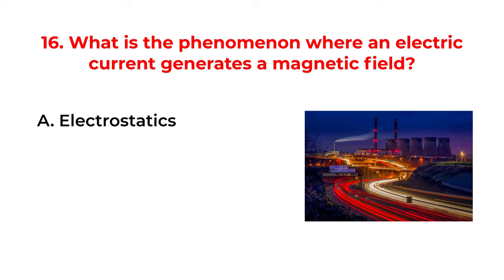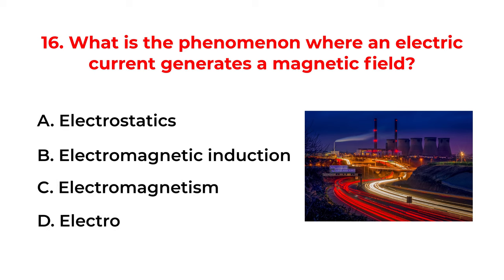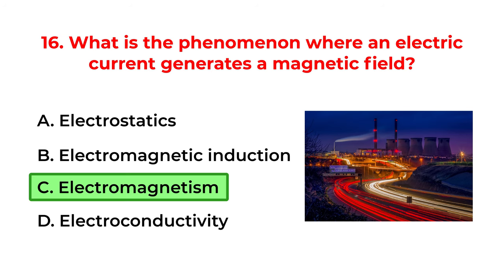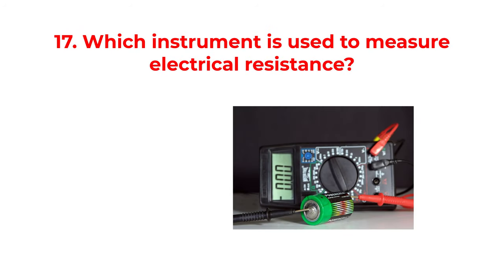What is the phenomenon where an electric current generates a magnetic field? A. Electrostatics. B. Electromagnetic induction. C. Electromagnetism. D. Electroconductivity. The correct answer is option C: Electromagnetism.